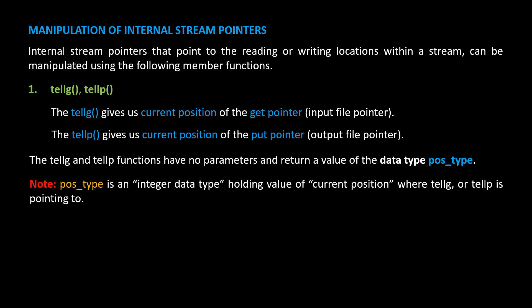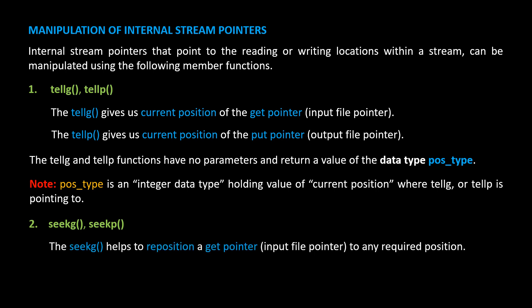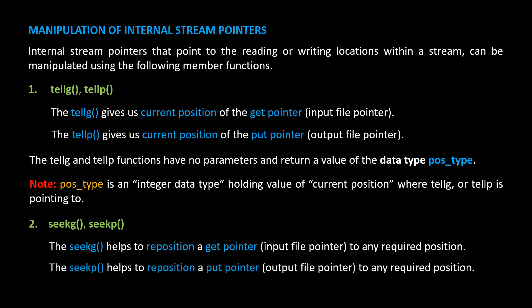Number two: seekg and seekp functions. The seekg function helps to reposition the get pointer — that is, the input file pointer — to any required position. The seekp function helps to reposition the put pointer, or the output file pointer, to any required position.